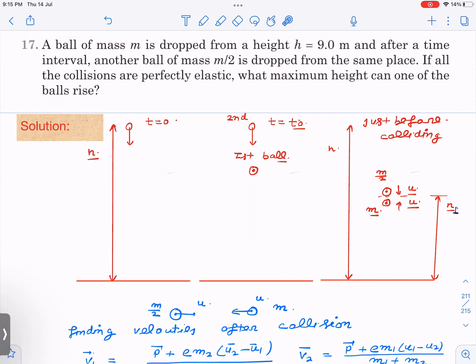height h equal to 9.0 m, and after a time interval, another ball of mass m/2 is dropped from the same place. If all the collisions are perfectly elastic, what maximum height can one of the balls rise? That is what we have to find out.